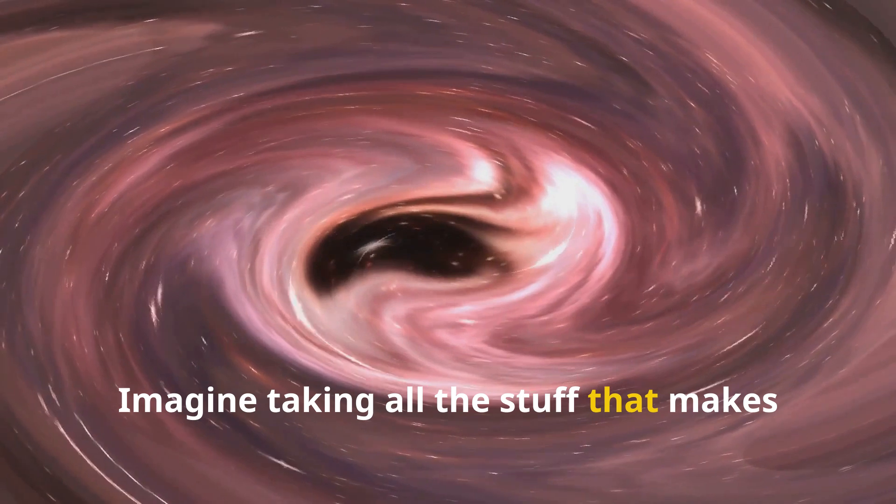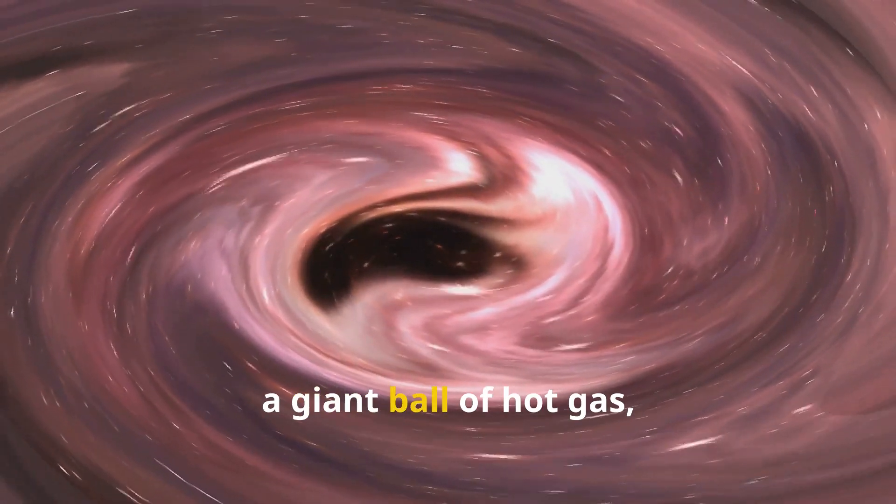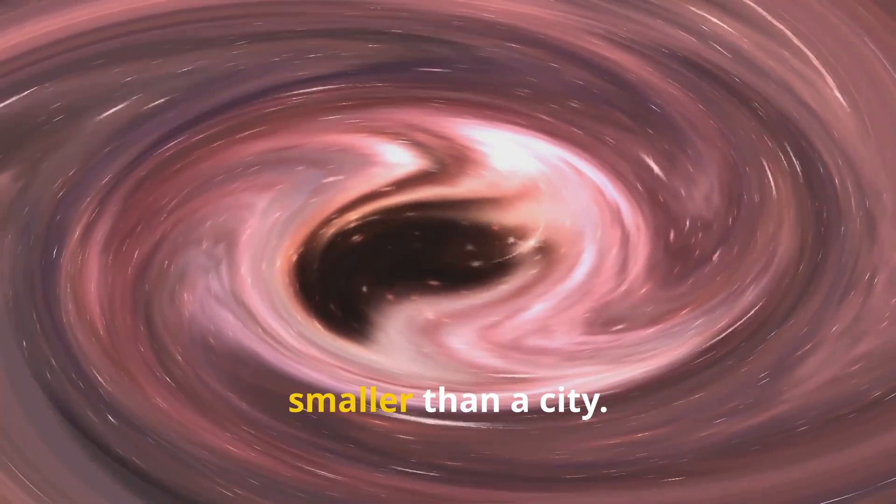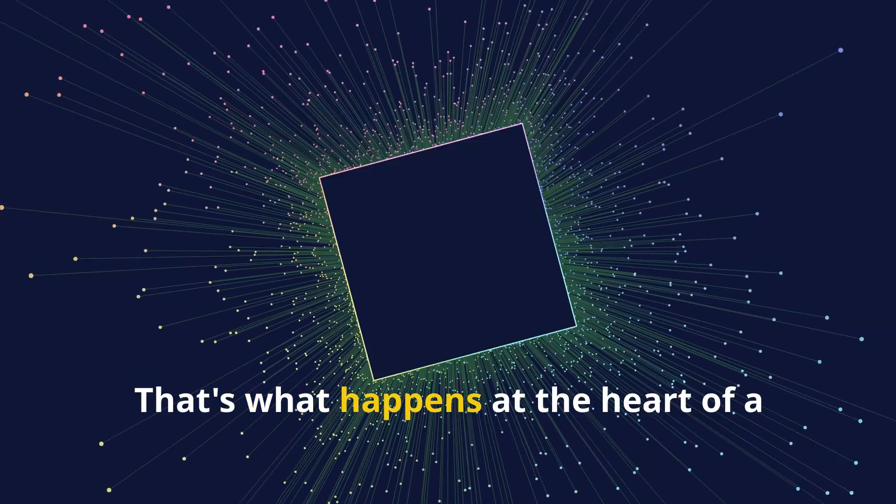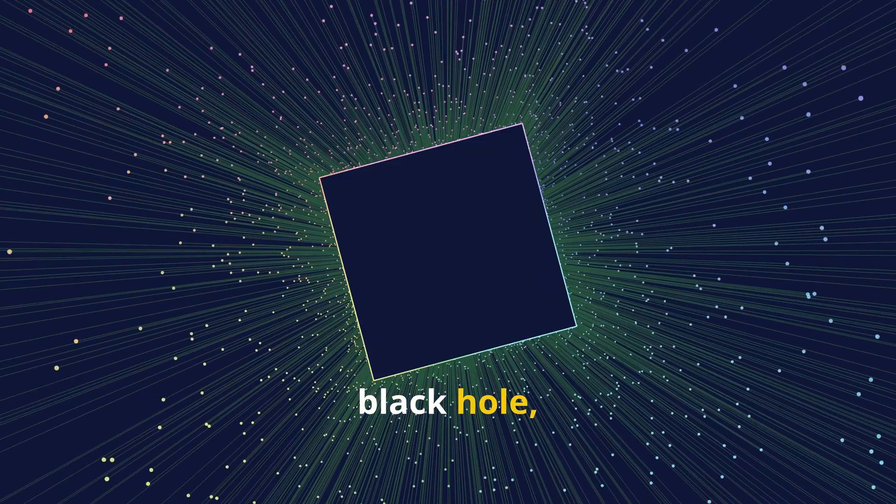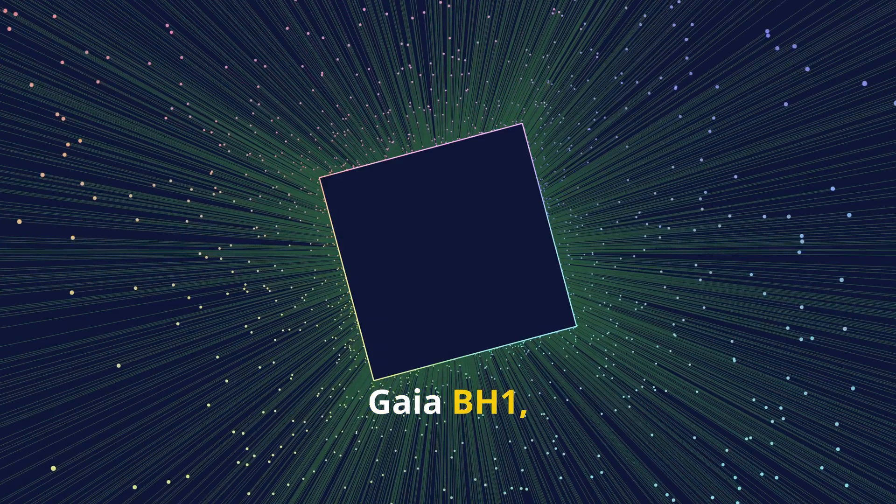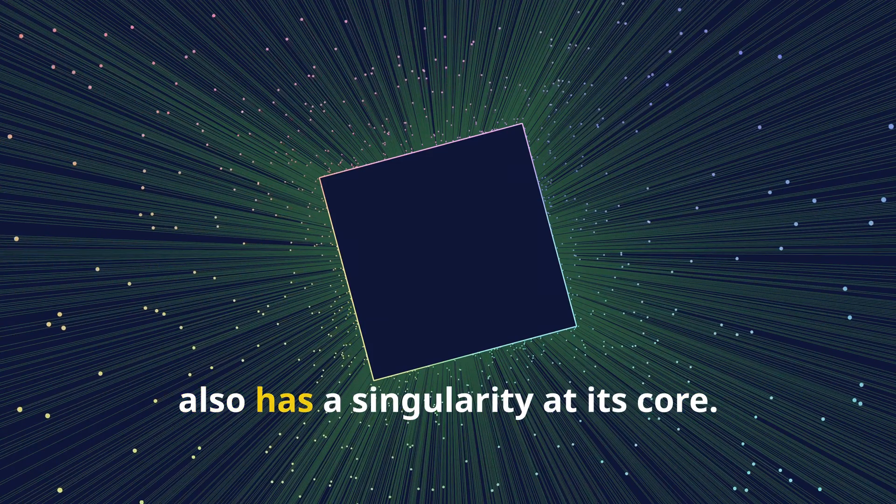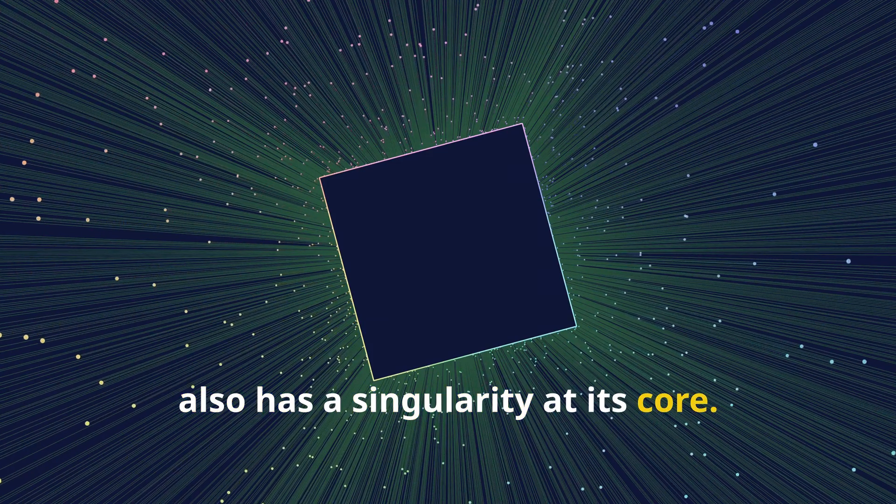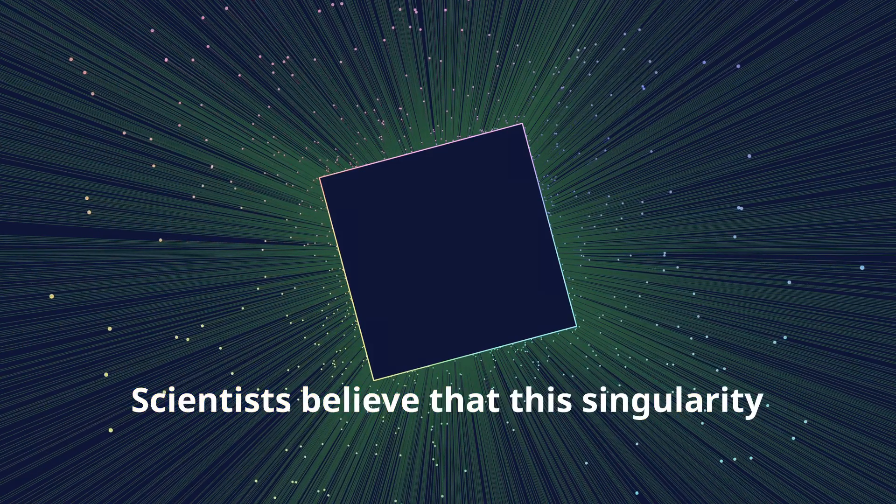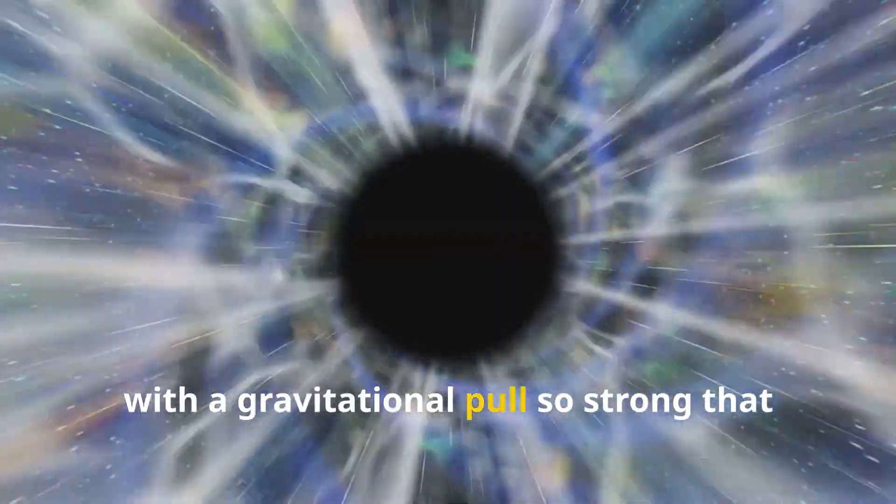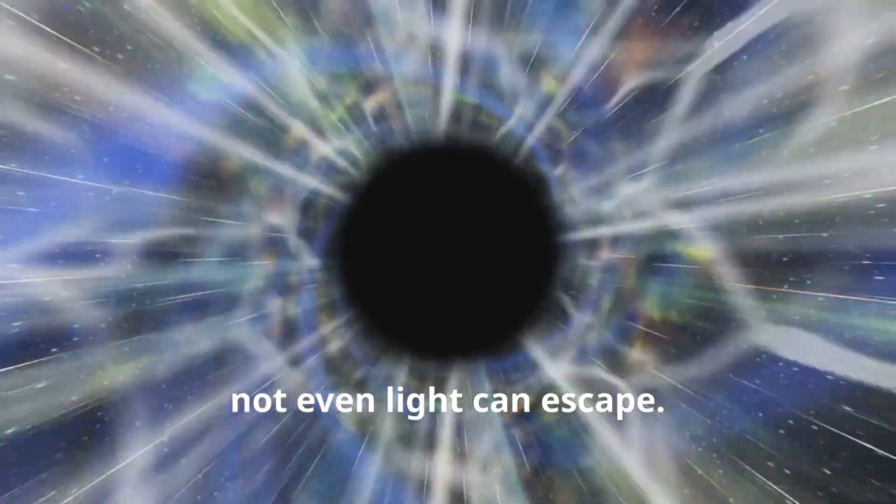Imagine taking all the stuff that makes up our Sun, a giant ball of hot gas, and squeezing it down into a tiny space smaller than a city. That's what happens at the heart of a black hole, and it's called a singularity. Gaia BH1, the closest known black hole to Earth, also has a singularity at its core. Scientists believe that this singularity is incredibly dense, with a gravitational pull so strong that not even light can escape.